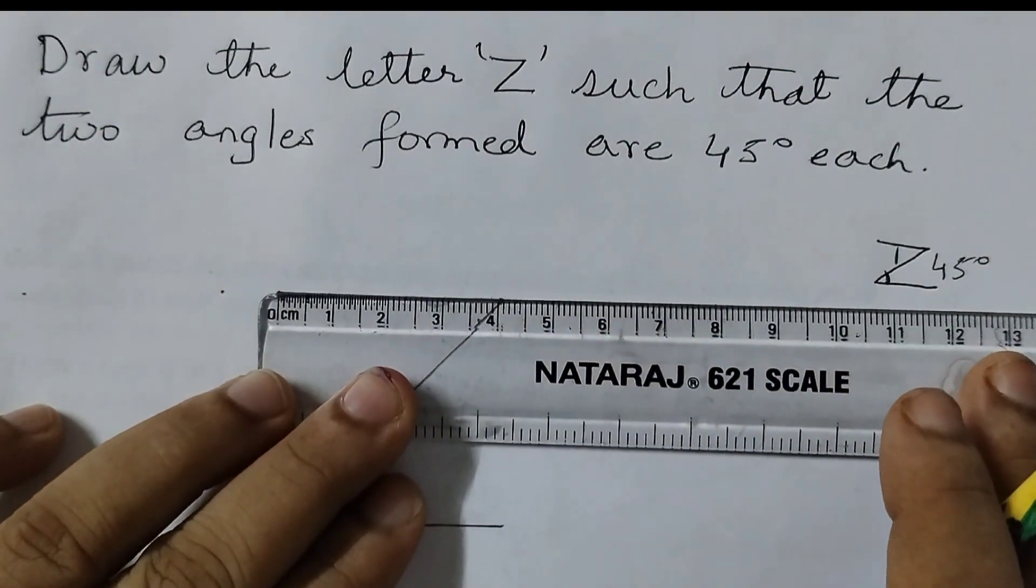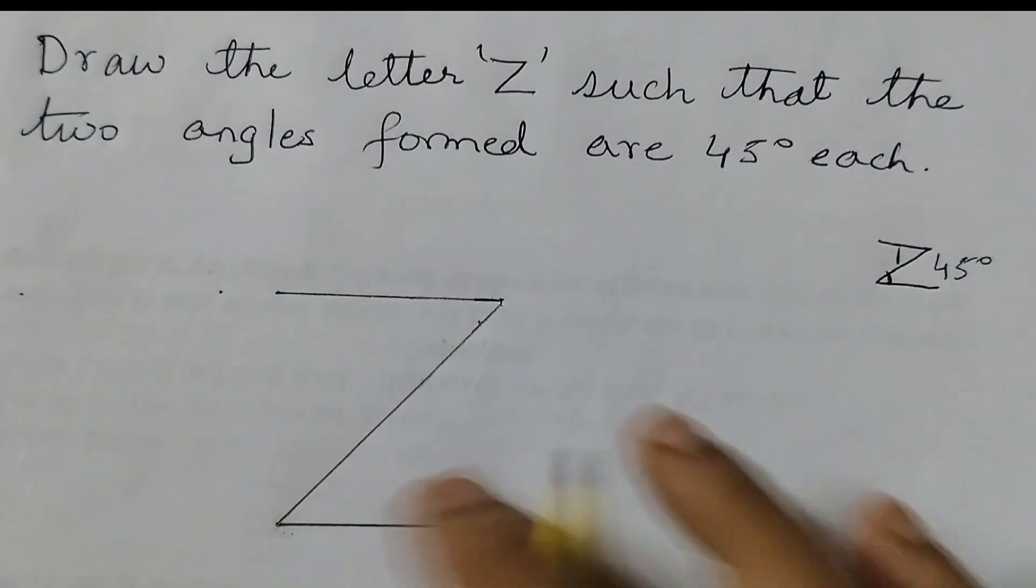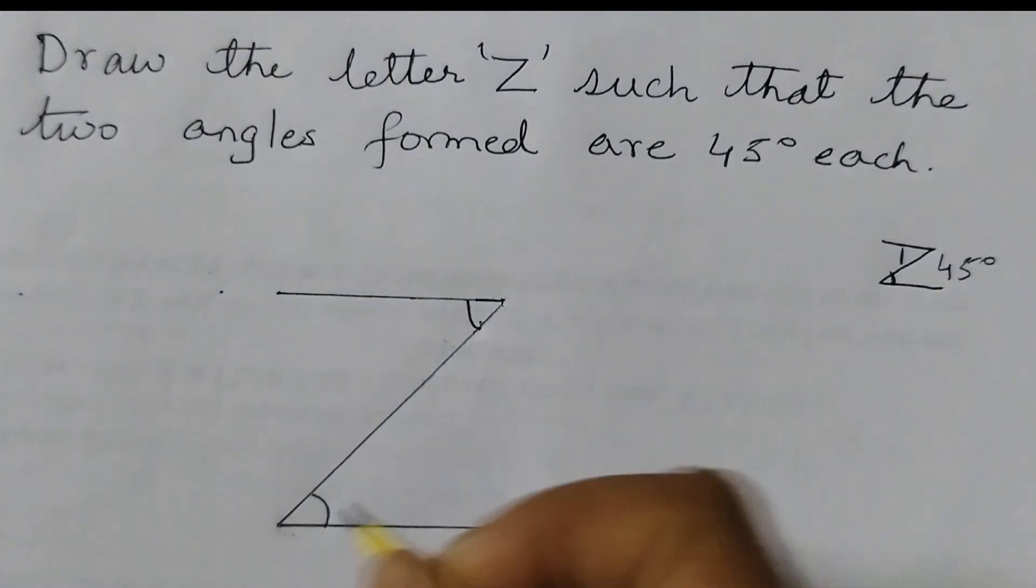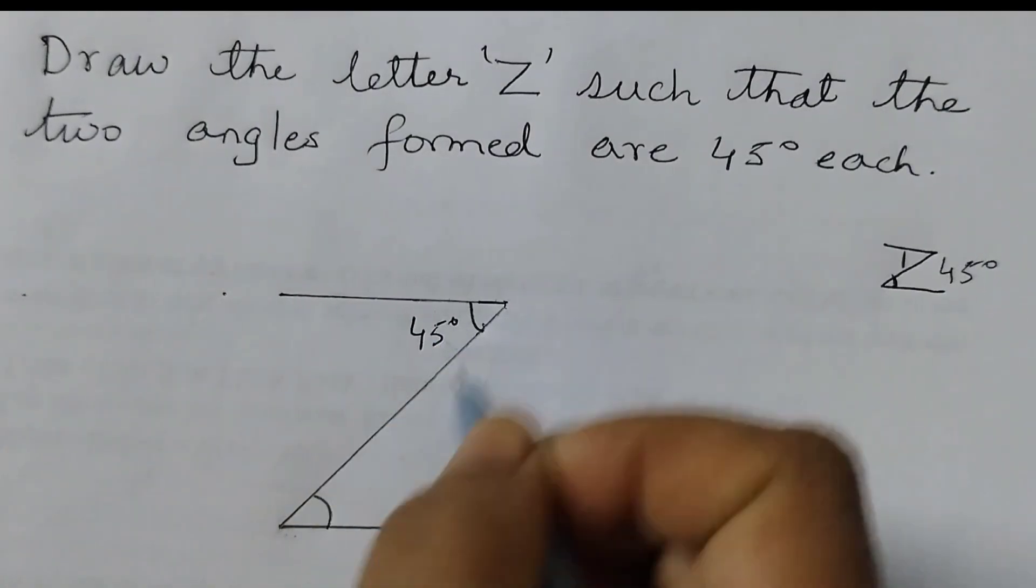So you can see here. This is approximately 4 cm, 4 cm. And this is 5.7 cm. And this angle here is 45 degrees.